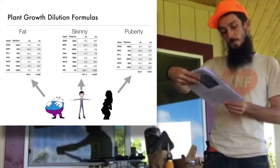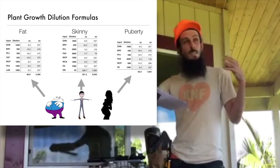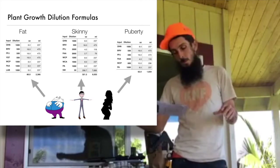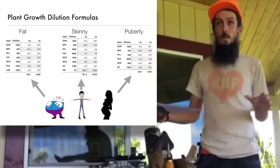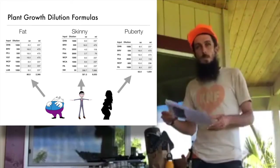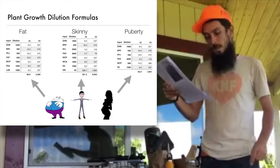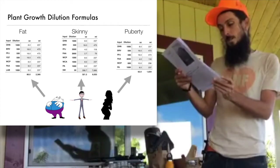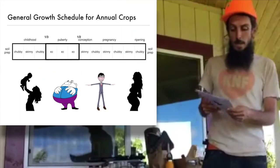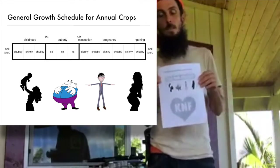The skinny formula really focuses on calcium, calcium phosphate, phosphoric acid, and seawater. Anytime you use seawater, using calcium with it really helps. All these things work synergistically with each other. Then the puberty formula focuses on phosphoric acid and calcium phosphate, and really drops down the amount of fuel. Basically all of that fits into the formula on the next page.